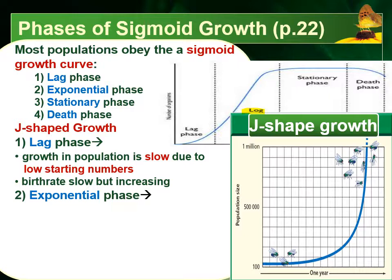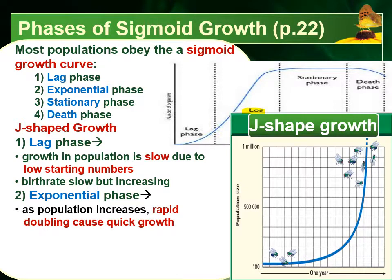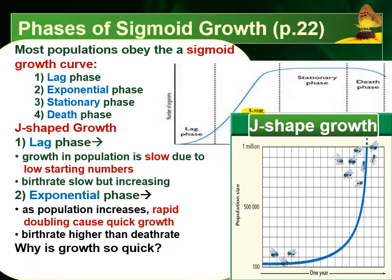Eventually we hit a turning point where the exponential phase kicks in. During the exponential phase, we see a rapid doubling of the population — very, very rapid growth. It's called exponential because the population starts doubling every time we go through a reproductive phase. This means the birth rate is significantly higher than the death rate, which is why the population is growing so quickly. The population is able to have so many successful reproductions because there aren't any limiting factors.